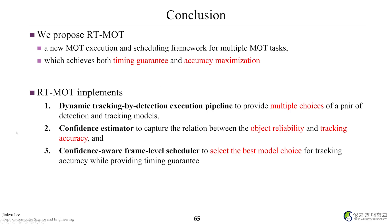In summary, we propose RTMOT: a new MOT execution and scheduling framework for multiple MOT tasks, which achieves both timing guarantees and accuracy maximization. RTMOT implements a dynamic tracking-by-detection execution pipeline to provide multiple choices of a pair of detection and tracking models. It also includes a confidence estimator to capture the relation between object reliability and tracking accuracy, and finally a confidence-aware frame-level scheduler to select the best option at runtime.